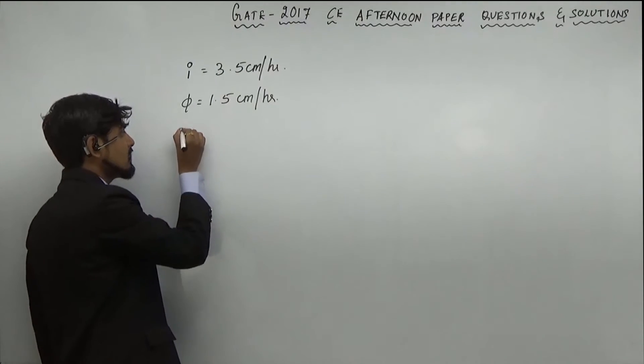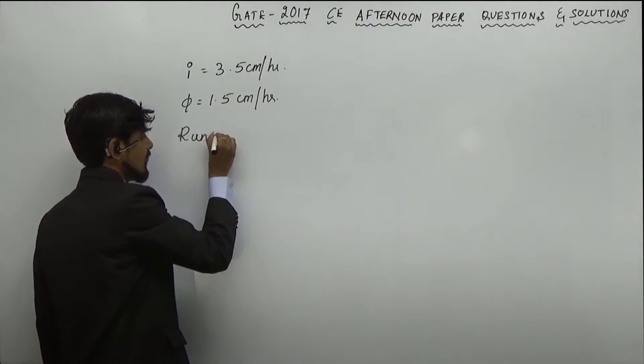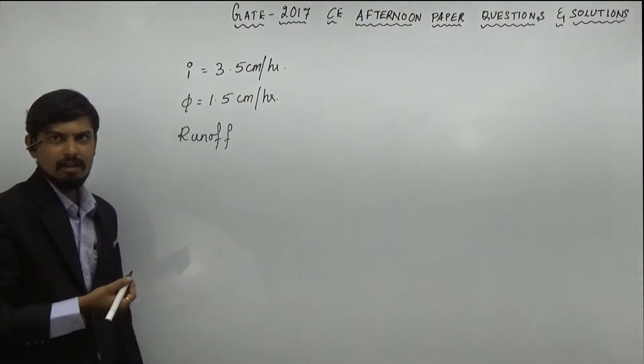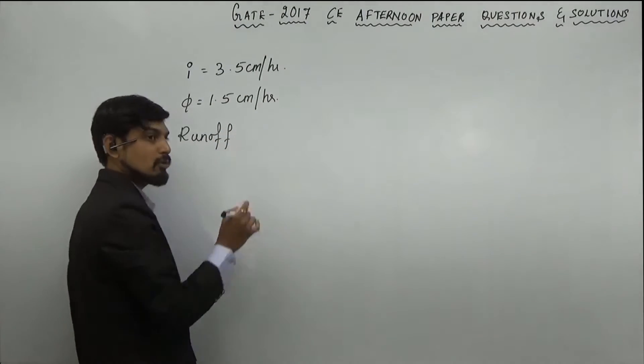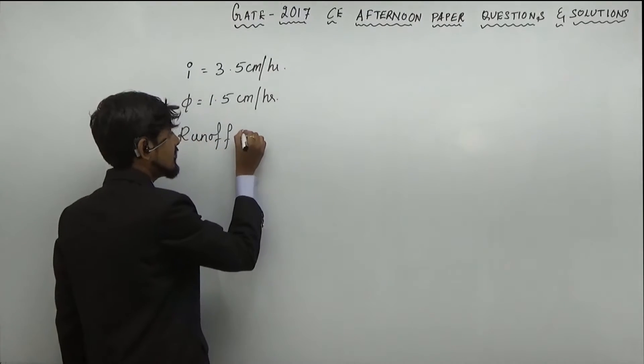What we are supposed to find out is runoff intensity. Effective rainfall is nothing but runoff. So, runoff we are not supposed to find it in terms of depth, it is also in terms of intensity.